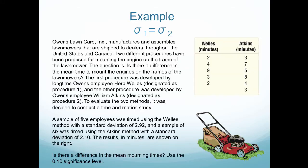So let's look at an example. So this is an example where my variances are unknown and my standard deviations are the same. So Owens Lawn Care Incorporated manufactures and assembles lawnmowers that are shipped to dealers throughout the United States and Canada. Two different procedures have been proposed for mounting the engine on the frame of the lawnmower. The question is, is there a difference in the mean time to mount the engines on the frames of the lawnmowers? The first procedure was developed by longtime Owens employee, Herb Wells, designated as Procedure 1. And the other procedure was developed by Owens employee, William Atkins, which is designated as Procedure 2.